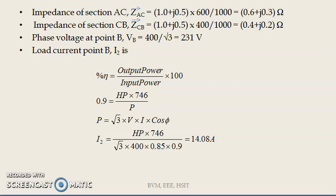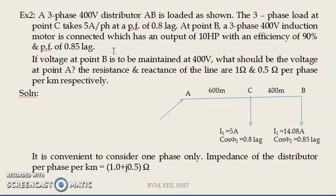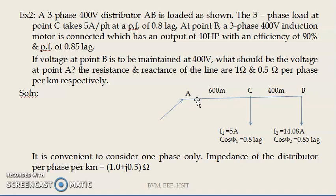What has been asked is: if the voltage at point B is to be maintained at 400 volts, what should be the voltage at point A — that is the sending end voltage. To calculate the voltage at point A, you must know the voltage at point C, and add the voltage drop in section AC to it. So you add the voltage drop in section CB to VB to get VC, and then add the voltage drop in section AC to VC to get VA.